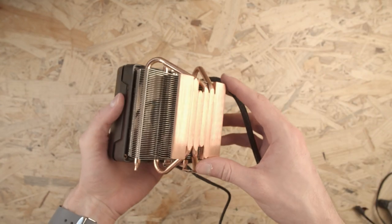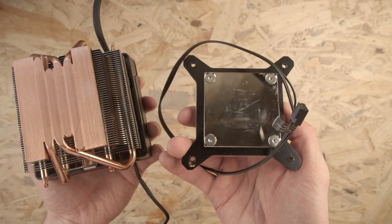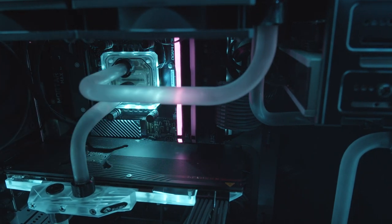That's why every cooler and water block on the market uses copper or aluminium to do it. And as I can't 3D print metal at home, and I bet you can't either, this restricts us to making the parts that move the water around the loop.